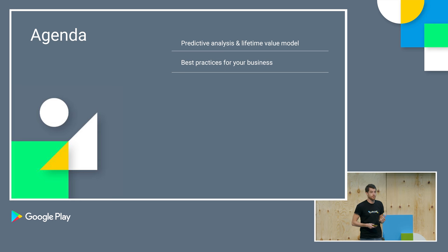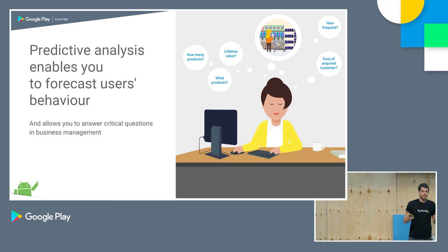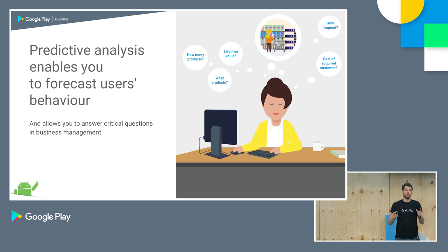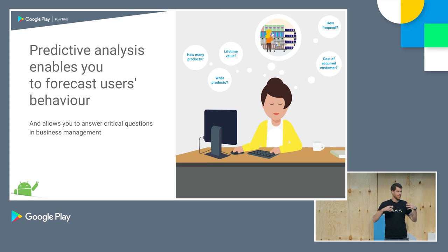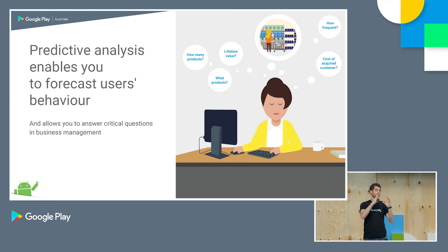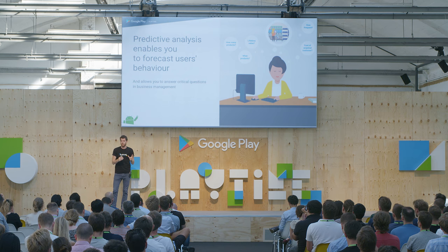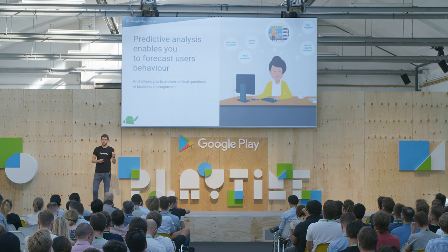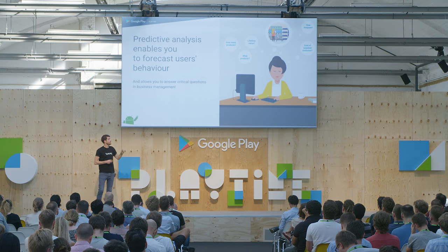Let's start with the first part. Predictive analysis is the underlying theory that helps you answer any kind of question you ask yourself about the future of your business. It helps you prove any kind of hypothesis right or wrong. Lifetime value is a part of this theory, but by far not the only one. It enables you to forecast user behavior — for example, a retail shop owner asks: what products should I put in my shop?